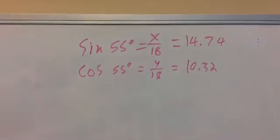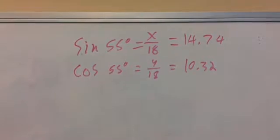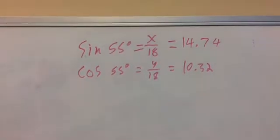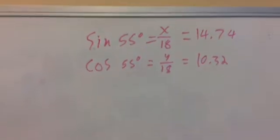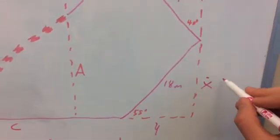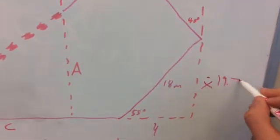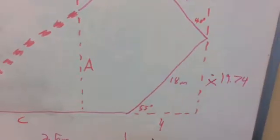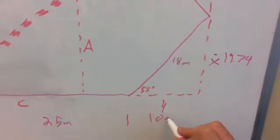Now after solving both of those, for the sine you should have gotten 14.74, and for the cosine 10.32. For the sine we were solving for X here, so we can plug in 14.74, and for the Y, 10.32.